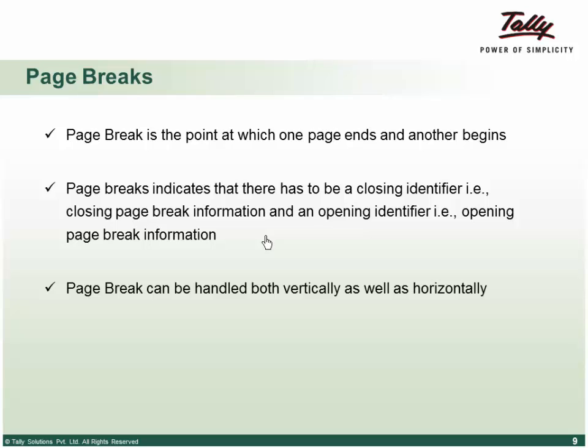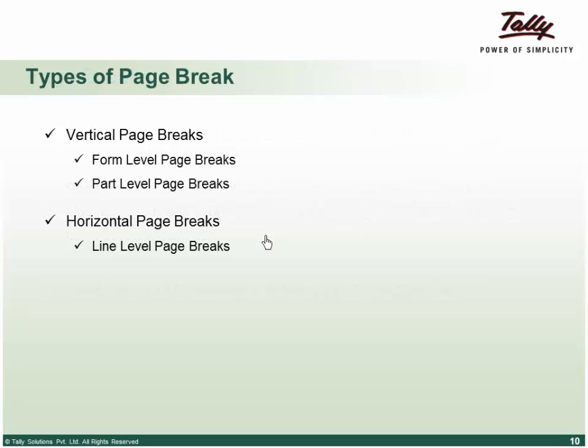We can have page breaks for both vertical and horizontal. About 90% of reports require a vertical page break; column reports require horizontal page breaks. Vertical page breaks can be given at the form level and parts level. At form level, a page break accepts a name of parts; at parts level, it accepts the name of lines. For horizontal page breaks, you provide a page break at line level which accepts the name of fields.